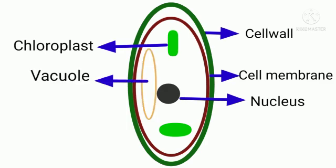Large vacuole is present in plant cell. Matrix inside the cell is cytoplasm.